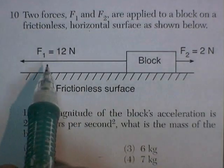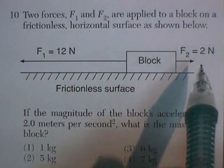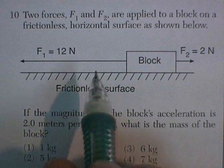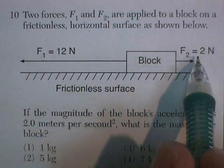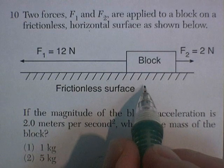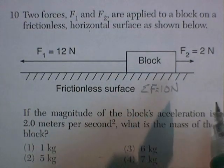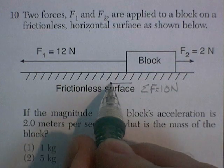Question 10. Two forces, F1 and F2, are applied to a block on a frictionless horizontal surface as shown below. So let's look at this. I've got 2 newtons going that way, 12 newtons. So my net force acting on this block is 10 newtons in that direction in case it becomes important.